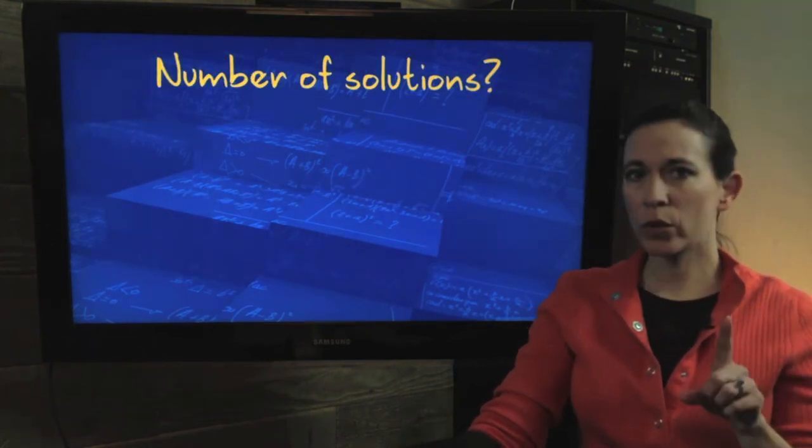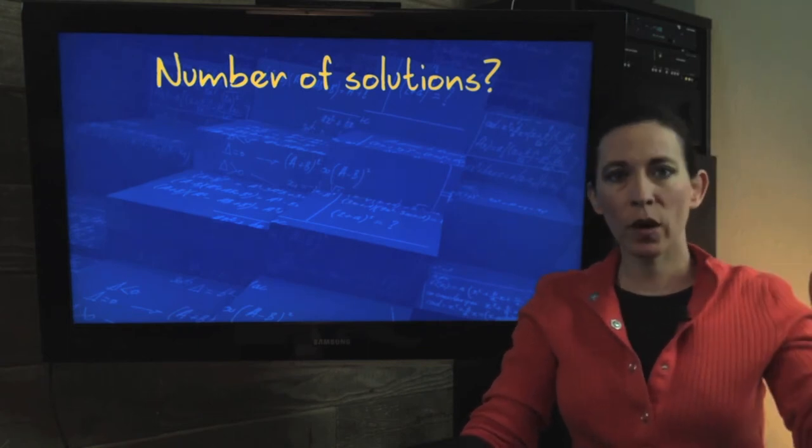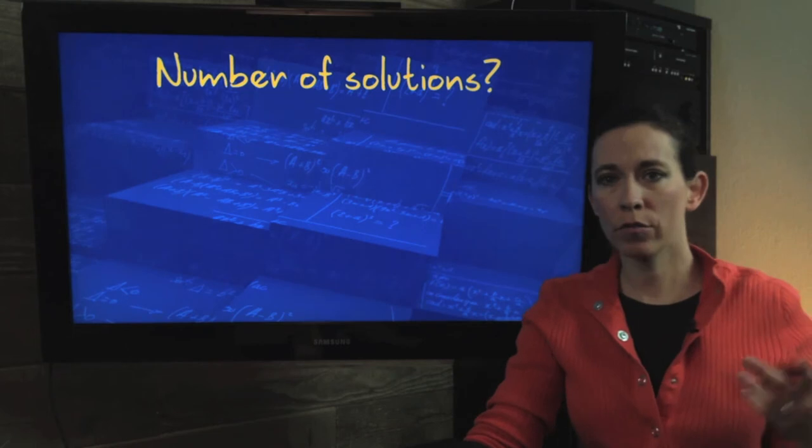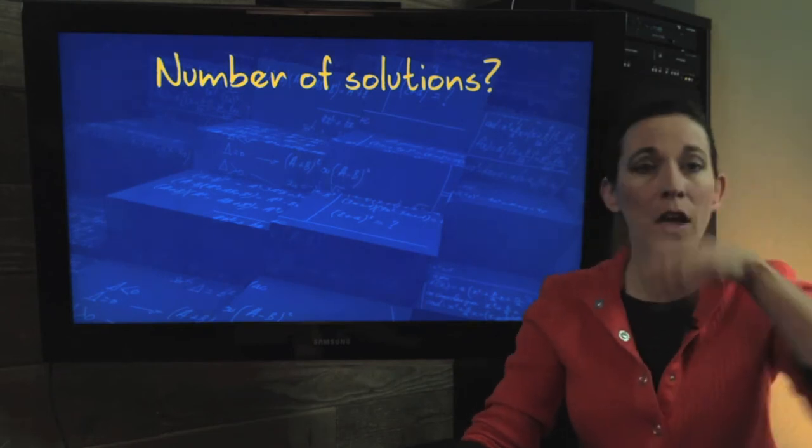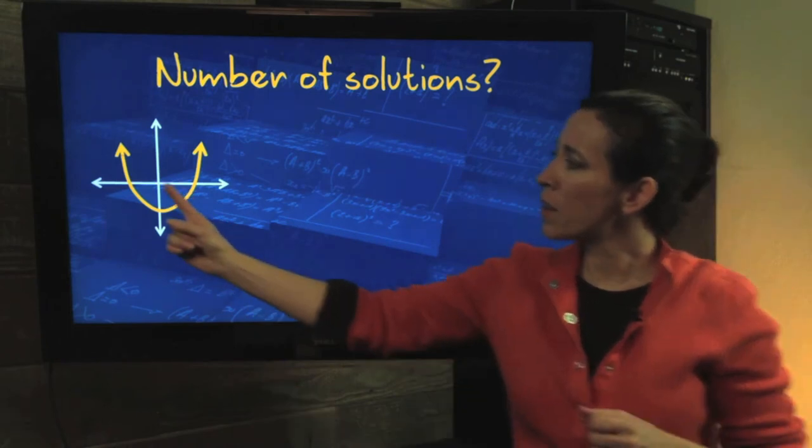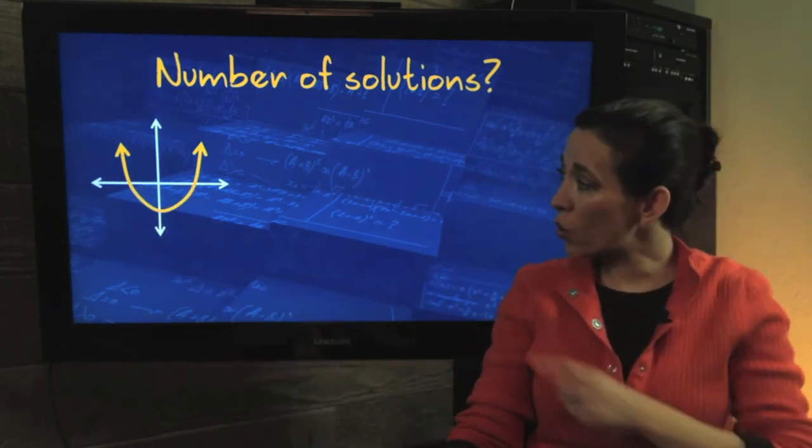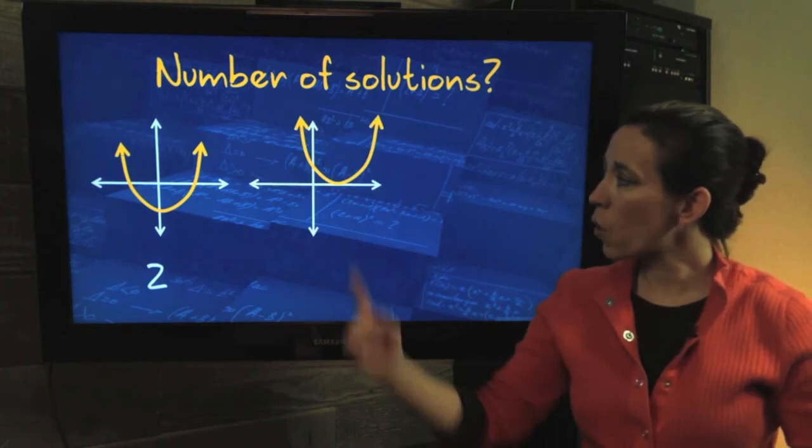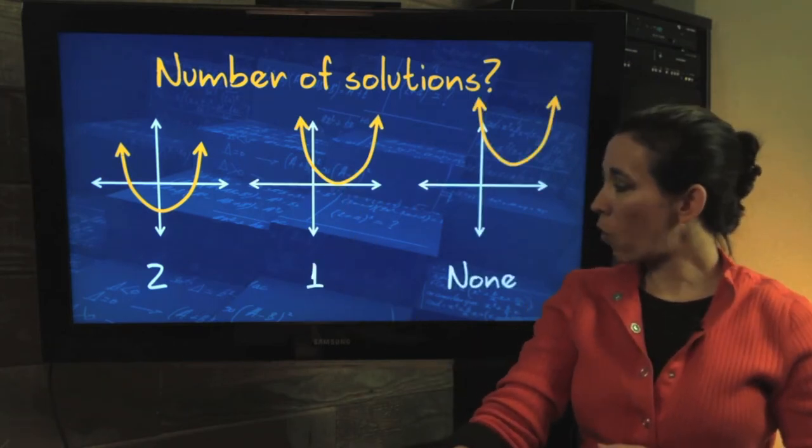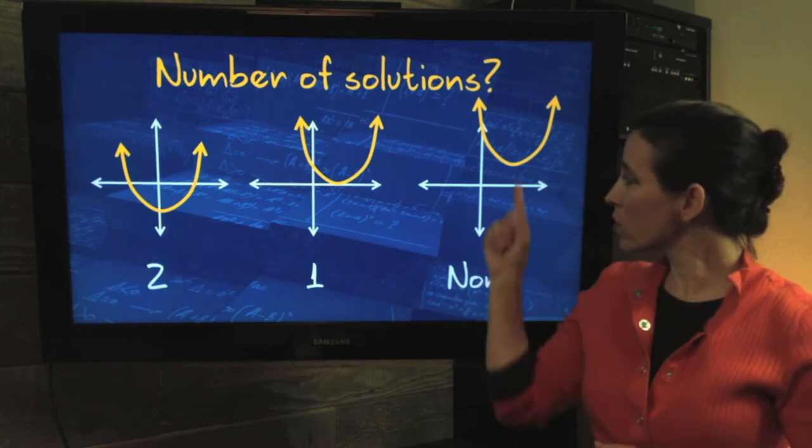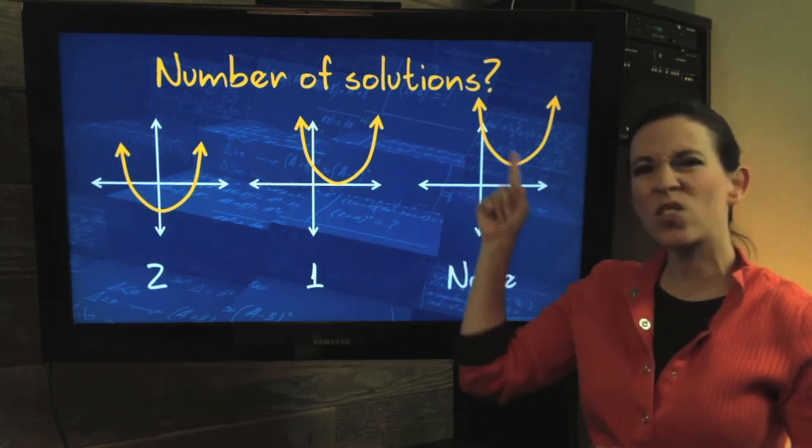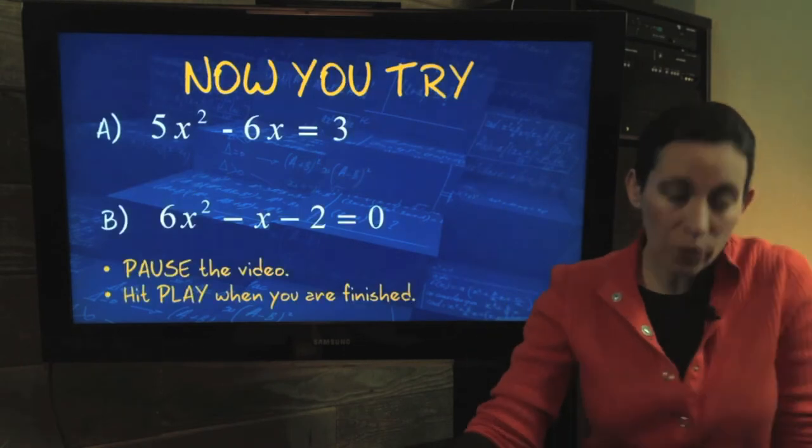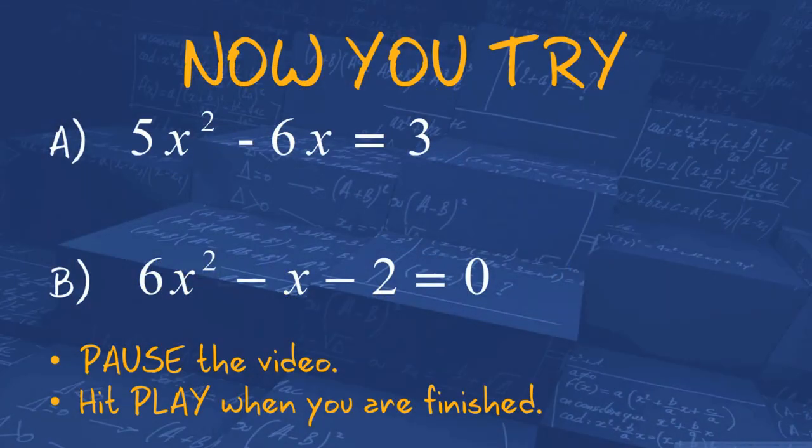Number of solutions, we'll just go over this real quick. It depends on what's underneath that square root, but it's all based on the graph. You're looking for your x-intercepts. So, you can either have two solutions, one solution, or no solution. No real solution, because there are no x-intercepts. This is where your complex answers would come in. So, now I want you to try. Here are two examples. Go ahead and pause the video. Give it a shot using the quadratic formula. And then when you're ready to go over your answers, go ahead and hit play.